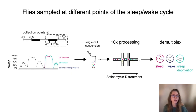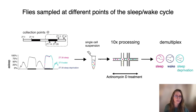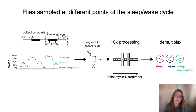We approached these questions by profiling flies at different points of the sleep-wake cycle with single-cell transcriptomics. Specifically, I selected flies at different sleep and wake conditions — for example these three conditions. The time points were either in the early or late night, or early or late day, which we indicate in Zeitgeber or ZT times. We then pooled all the fly brains together in a single suspension to avoid batch effects by applying a multiplexing strategy.